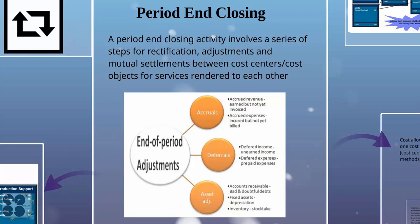If there is an overpayment, over-expense, or wrong entry in our books, we adjust that. Whenever we adjust, we post credits and debits to different cost objects, cost centers, or cost elements. That's how period end closing is important in this chapter.